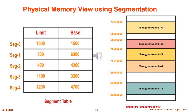Segment 0 starts at 1,500 and goes up to 3,000 because the limit is 1,500, so limit represents the size and base represents the starting position. For segment 1, its base is 6,300, so it starts occupying space from 6,300, and its size is 500, meaning it goes up to 6,800 (6,300 + 500 = 6,800). Likewise, memory has been allocated for the remaining segments in the same way.